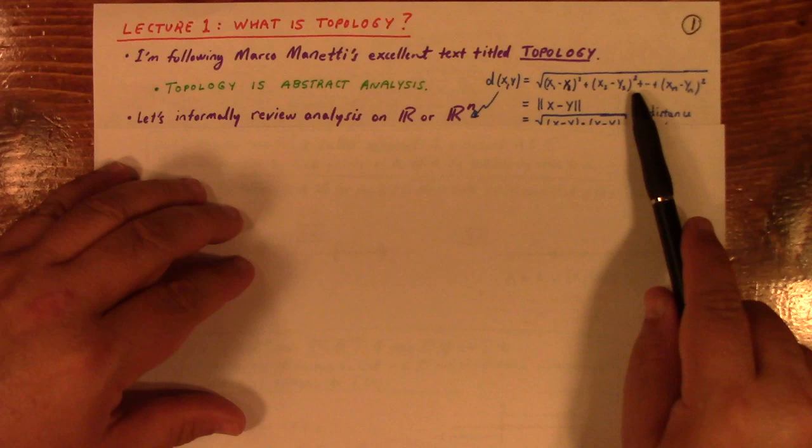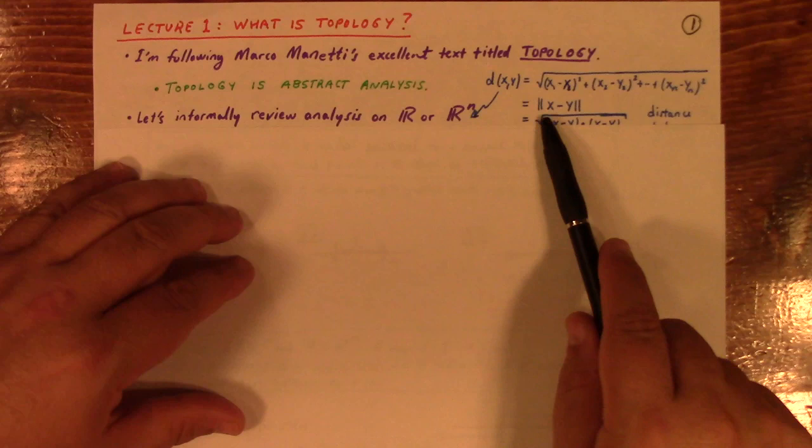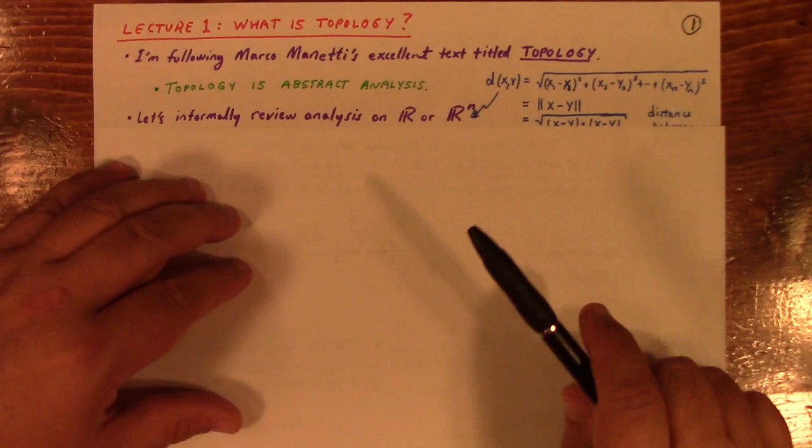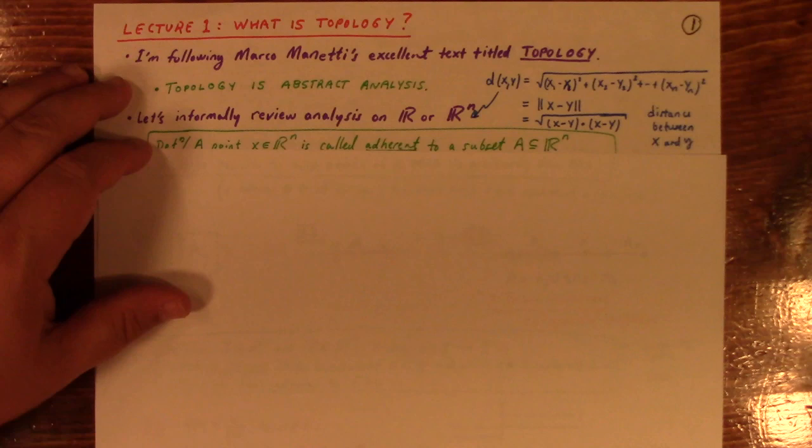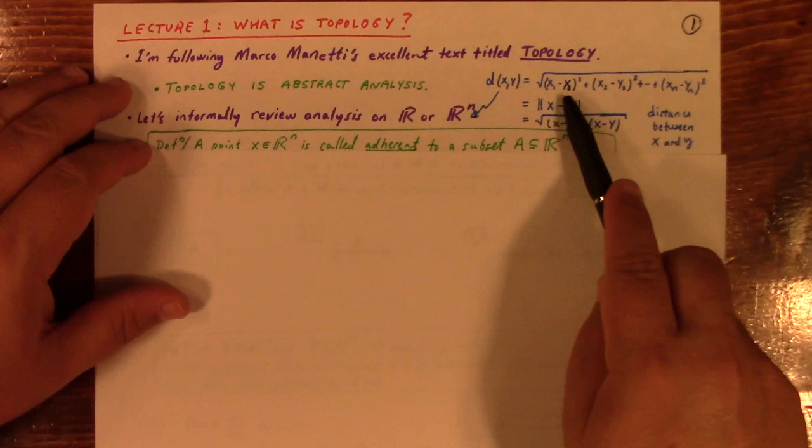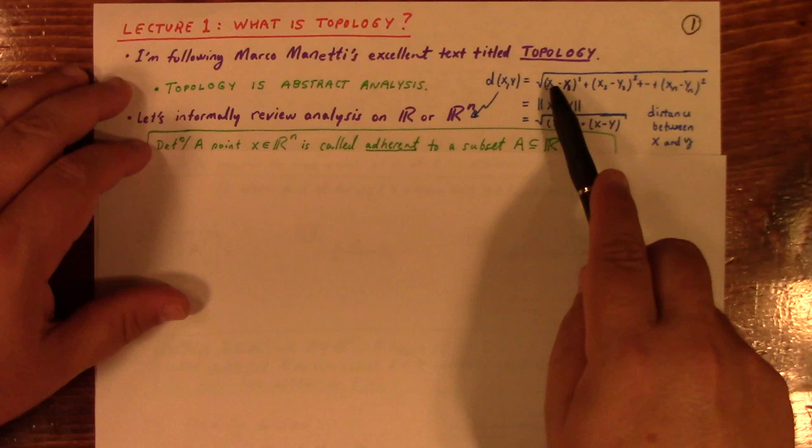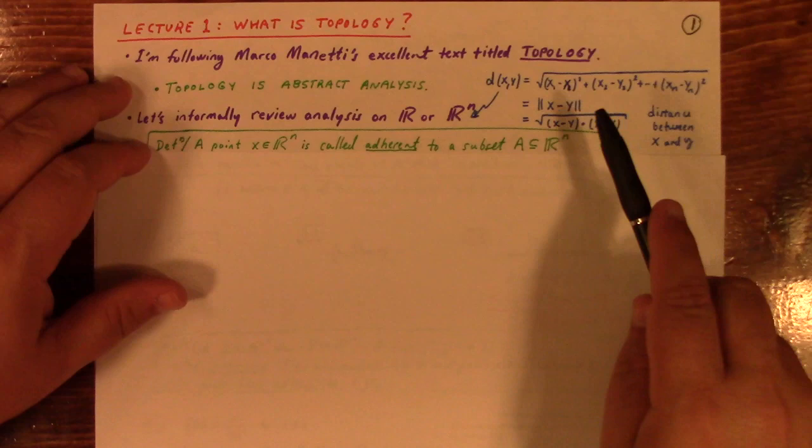The square root of the sums of the squares of the differences between the points. Or you can calculate the norm of the displacement vector, or the square root of the dot product of the displacement vector with itself. These are the same formula, different ways of looking at it. This is the distance between point X and Y. R or R^N paired with this notion of distance is what we refer to as Euclidean space. This just collapses down to absolute value for R.